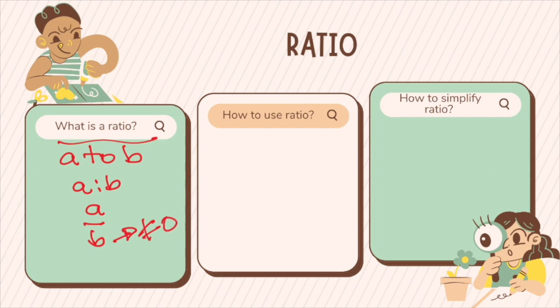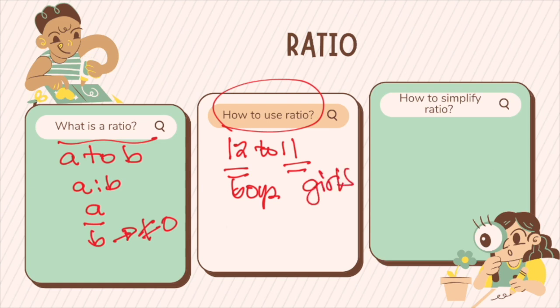Ratios are expressed in simplest form. Now, how to use ratio? For example, if you are being told that the ratio of boys and girls in the class is 12 to 11, this means for every 12 boys, you can find 11 girls to match. Therefore, you could also say if there are 24 boys, that means that you will have 22 girls.